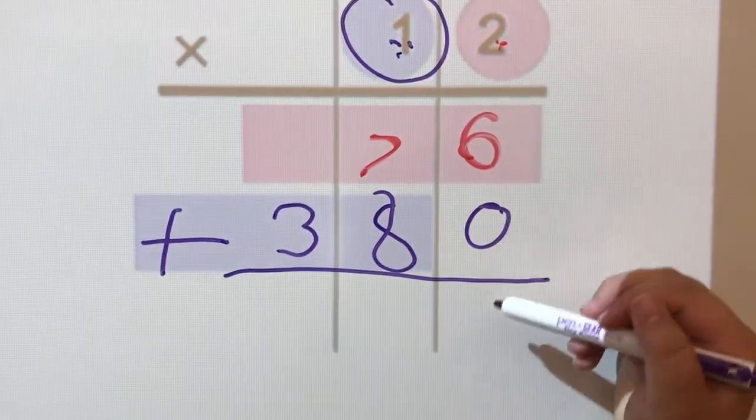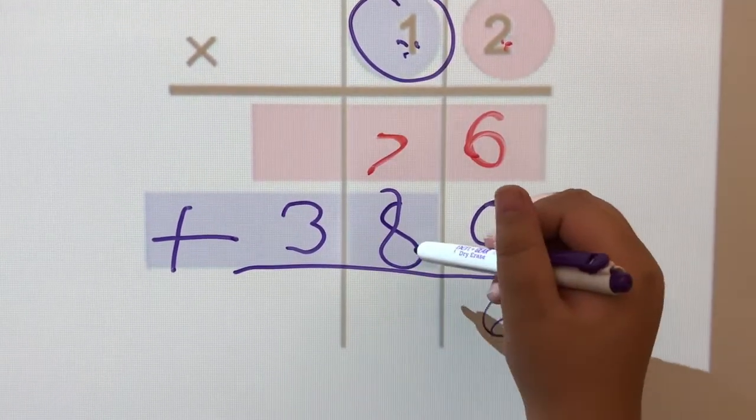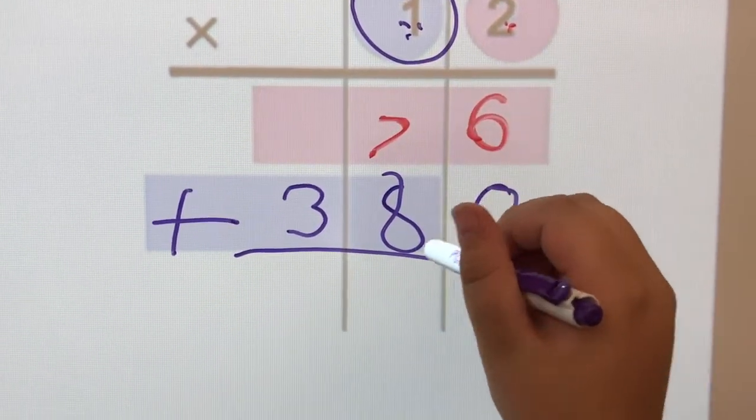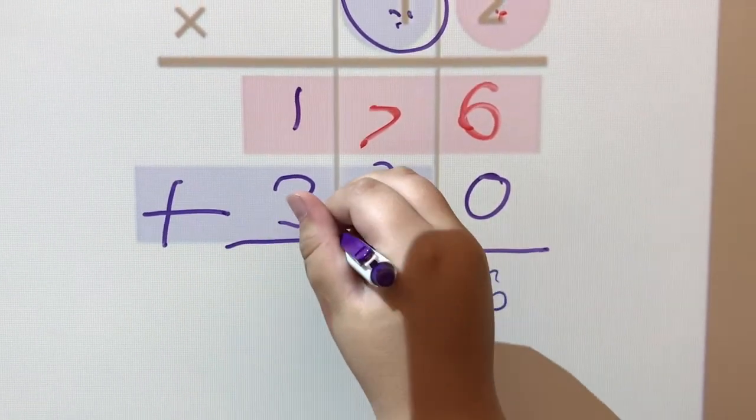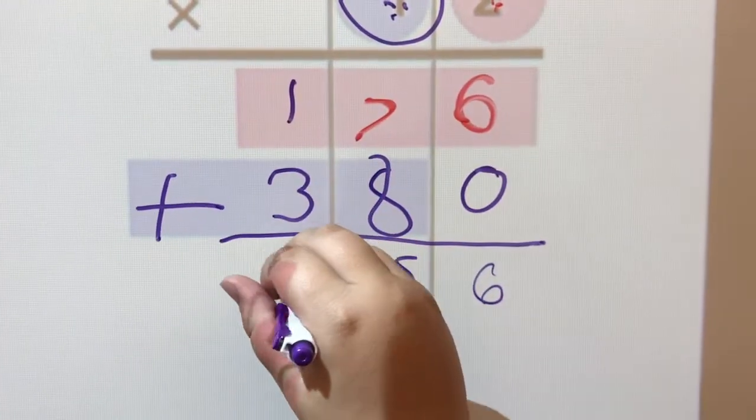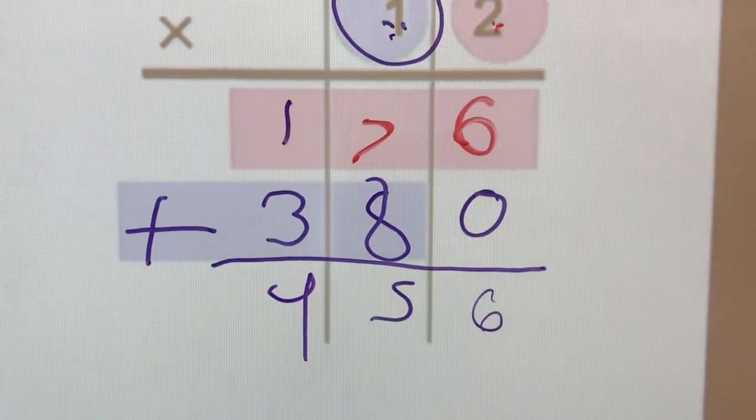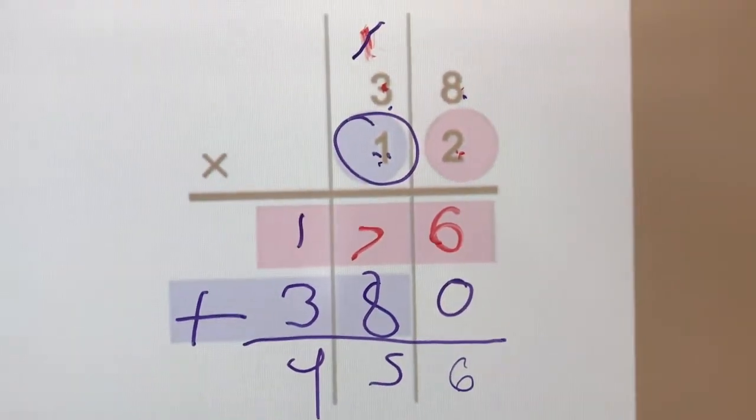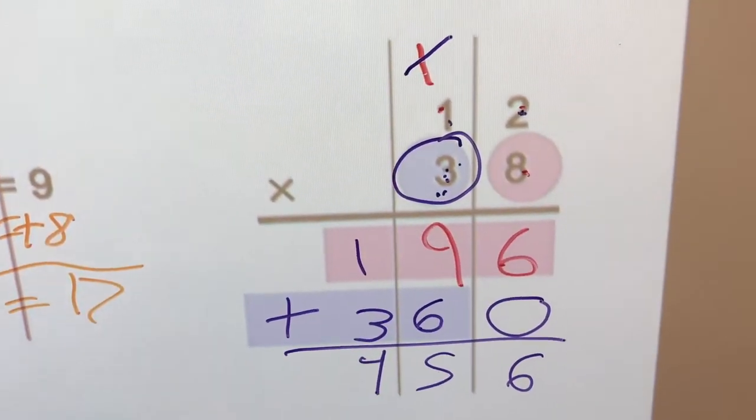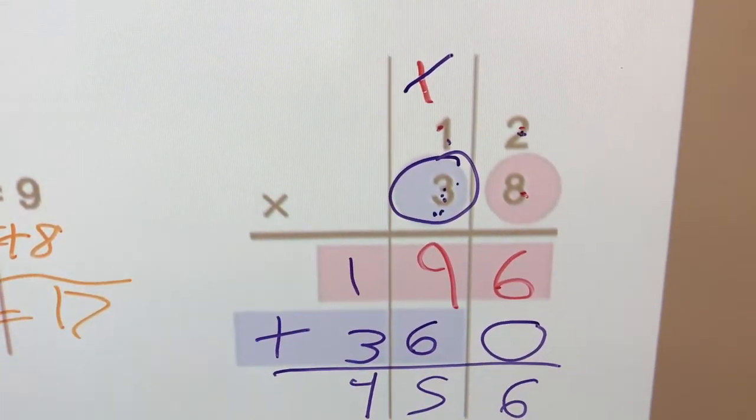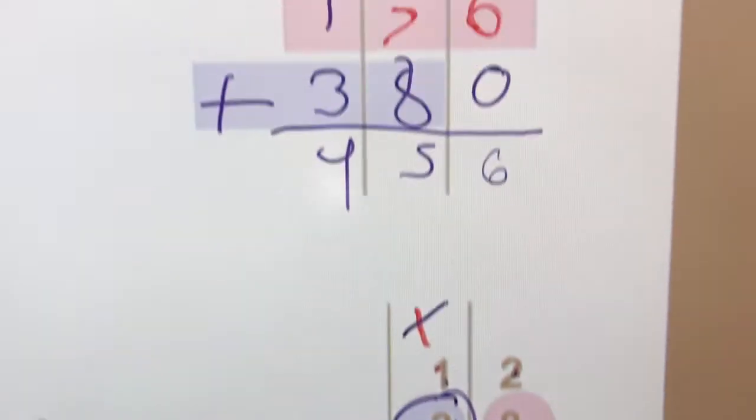Then 0 plus 6 equals 6. 7 plus 8 equals 15. And 3 plus 1 equals 4. We're in the hundredths place. Good. 456 for 38 times 12. And look, you got 456 for 12 times 38. So it looks good, you know you're right.